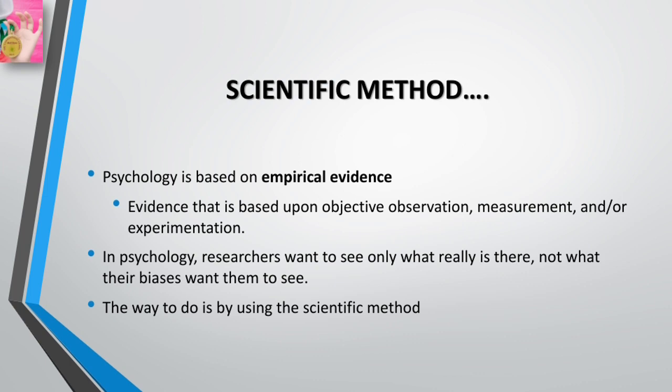As we have discussed in previous videos, the four basic goals of psychology are to describe, to explain, to predict, and to control or influence behavior and mental processes. In trying to achieve these four goals, psychologists rely on the scientific method. The scientific method refers to a set of assumptions, attitudes, and procedures that guide researchers in creating questions to investigate, generating evidence, and drawing conclusions.